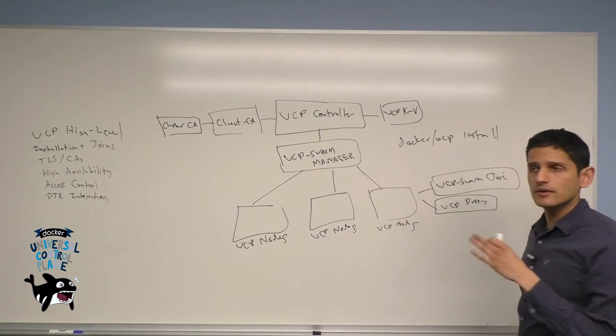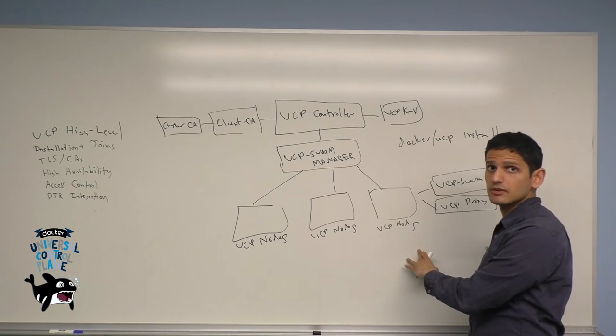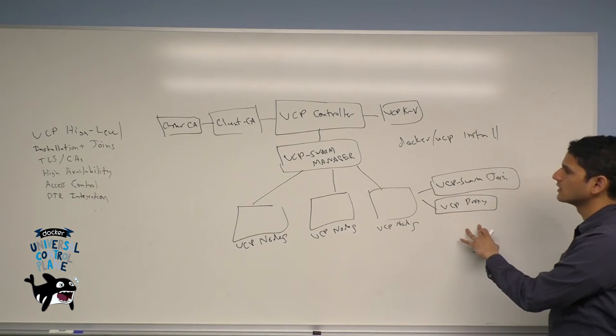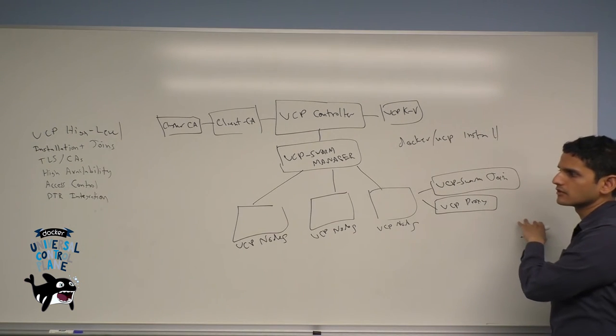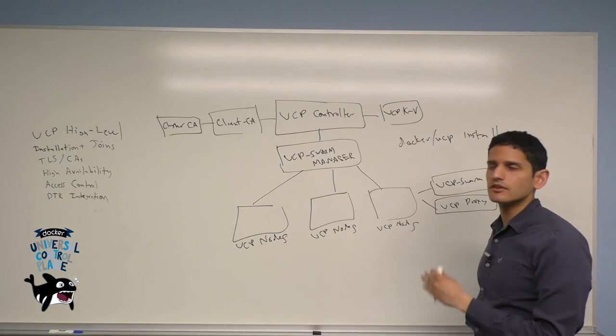It also in the initial deployment of UCP allows the UCP controller to act as a node for running application workloads as well. So it'll add both the UCP proxy as well as the heartbeat container to the original node as well. So that's how you do an initial install.